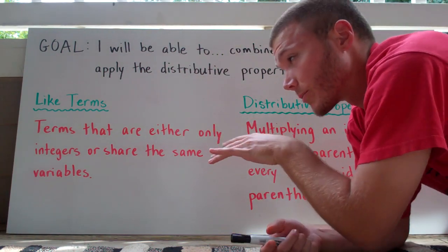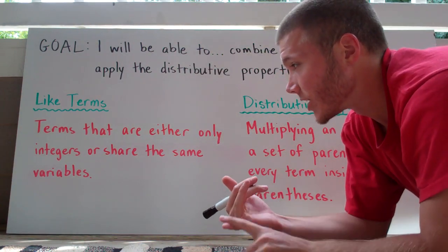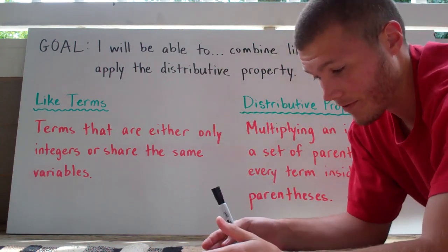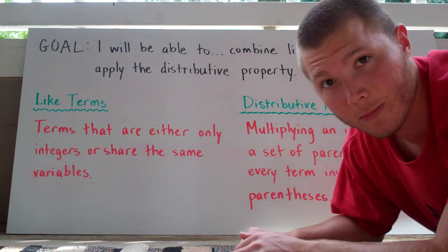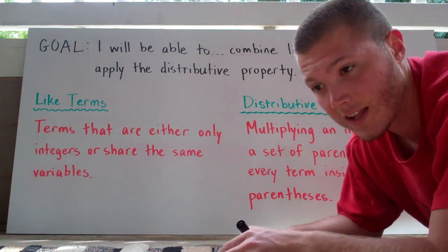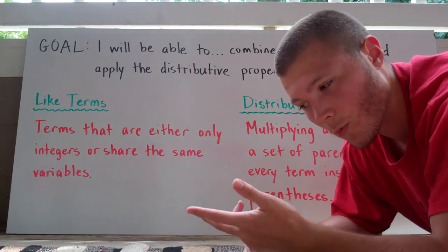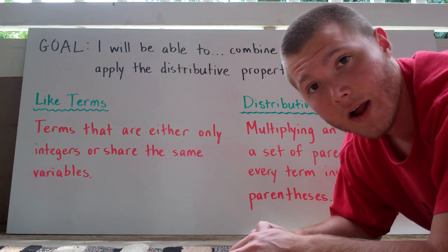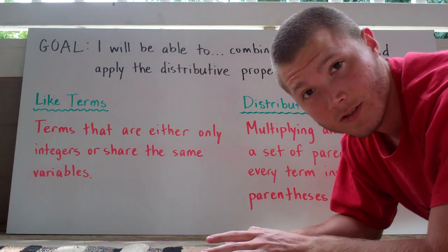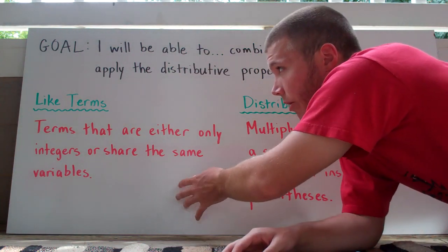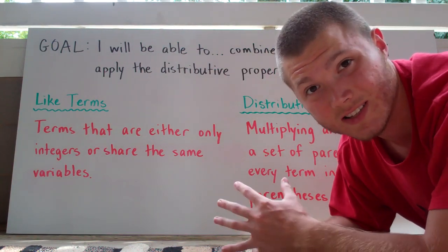First, like terms. Like terms are terms that are either only integers, like negative 5 and 12 — those are like terms — or if they share the same variable. For example, negative 3x and positive 8x: because they share that same variable, we can consider them like terms. For these problems, we're not going to be dealing with variables that have exponents above them, but that would change our definition of like terms.